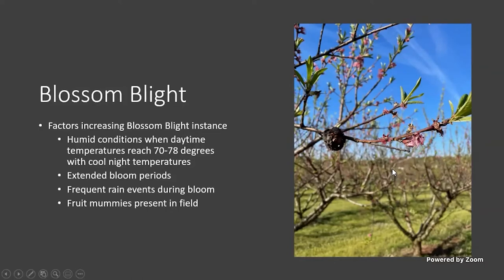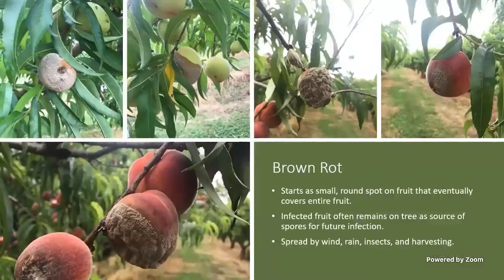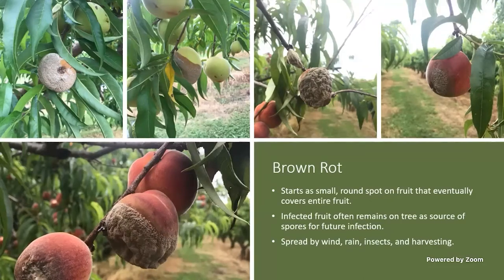Brown rot starts with a small brown spot on fruit and will eventually cover the fruit fairly quickly. The mummies typically stay on the tree and produce spores for future infections. They're spread by wind, rain, insects, and even harvesting. When walking through the field it's tempting to grab one of these and throw it on the ground, but then you're spreading spores on your hand. If you've never seen this in person, you can just about blow on one of these peaches and it's just a powder — it spreads very easily.